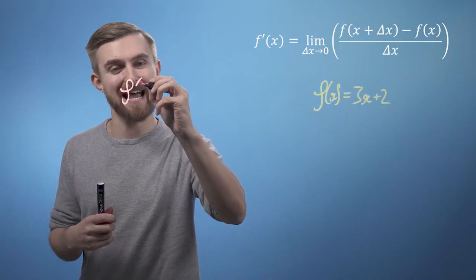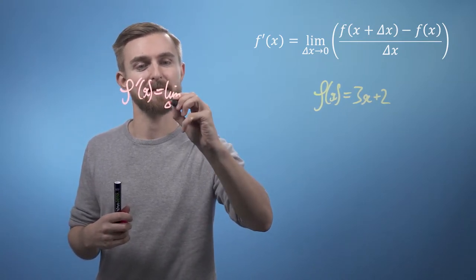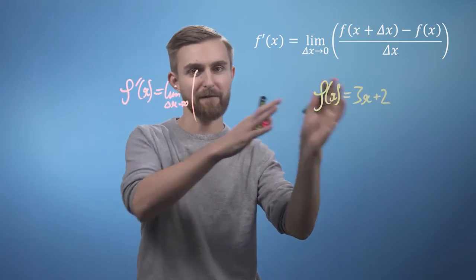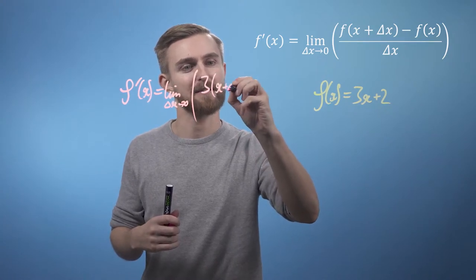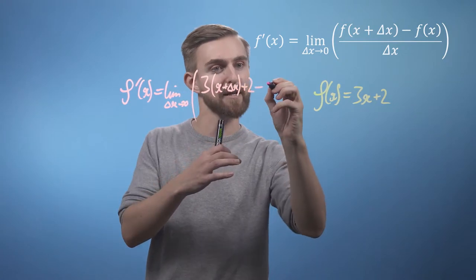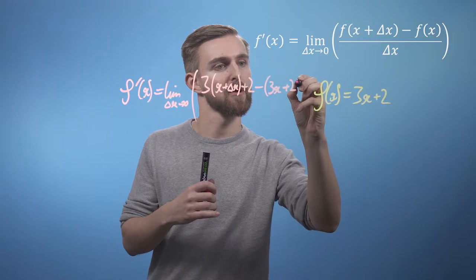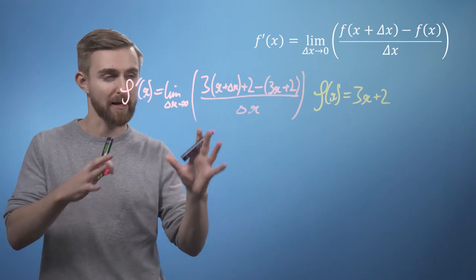So we can immediately sub this straight in and say, okay, f dash of x is going to equal the limit as delta x goes to zero of, so we're taking our function and subbing it in, 3 times x plus delta x plus 2 minus 3x plus 2, all divided by delta x, okay?